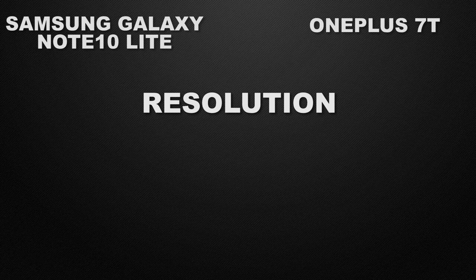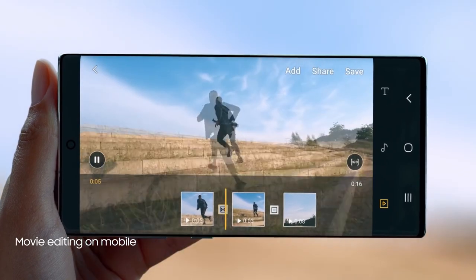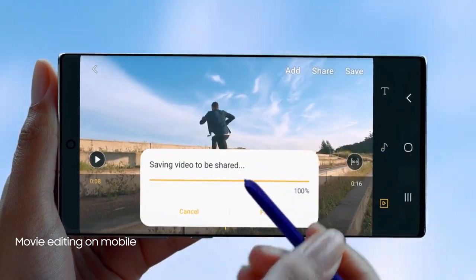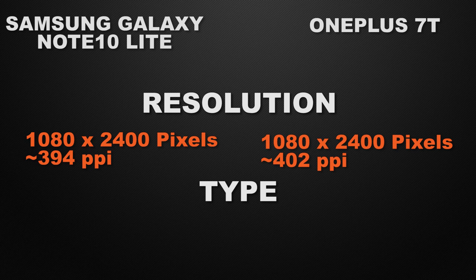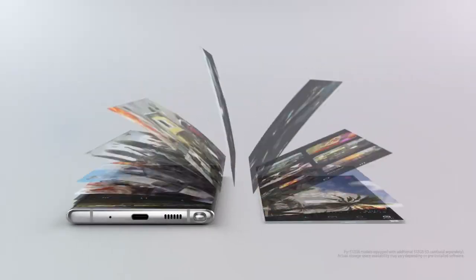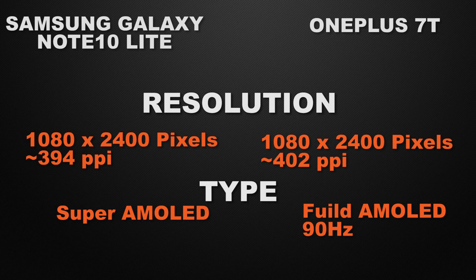About the resolution, both devices come with 1080p Full HD display, so there is a tie between them. Talking about the display type, Note 10 Lite comes with Super AMOLED display and OnePlus 7T comes with Fluid AMOLED with 90Hz display, so the clear winner is OnePlus 7T.